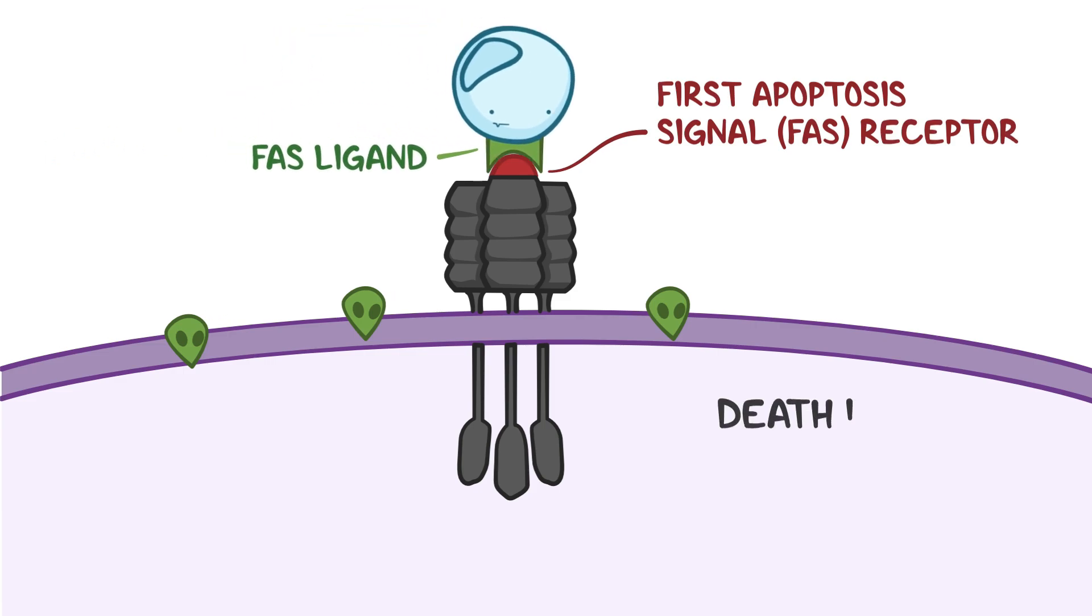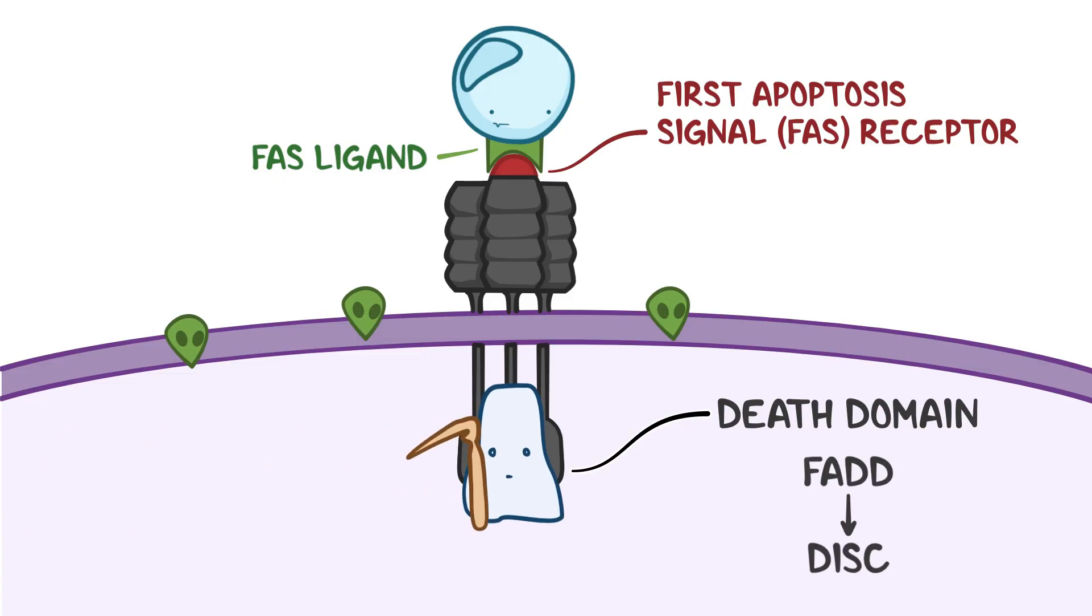Similar to the death domain of tumor necrosis factor receptor 1, the FAS receptor protein also has its very own death domain that can bind to FADD to form DISC. As before, DISC activates procaspase-8 into caspase-8, and that triggers the caspase cascade, which leads to apoptosis.